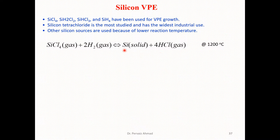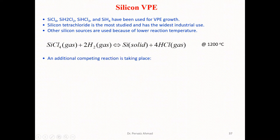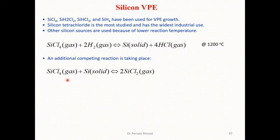As a result of that reaction, we get silicon in solid form along with HCl in gaseous form. There is also a competing reaction: silicon tetrachloride in gaseous form plus silicon in solid form can yield silicon dichloride in gaseous form. Both the main reaction and this competing reaction are bidirectional — they can run in either direction.